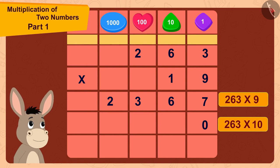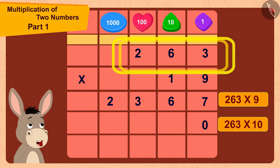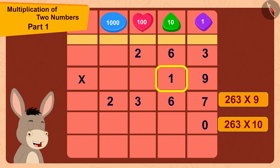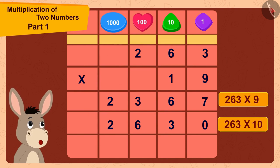And then, I just have to multiply 263 with 1. 263 multiplied by 1 is 263. And now, finally in this way,